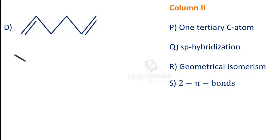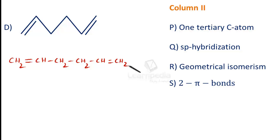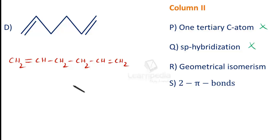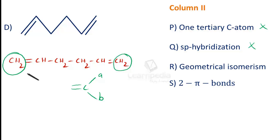Compound D, when extended, is: CH2=CH-CH2-CH2-CH2-CH=CH2. There is no branching, so no tertiary carbon, and no triple bond or carbon forming two double bonds, so no SP hybridization. Regarding geometrical isomerism: the double-bonded carbons in both cases are each attached to two hydrogen atoms — the same groups — so neither double bond leads to geometrical isomerism. However, with two double bonds present, there are two pi bonds, so property S is satisfied.